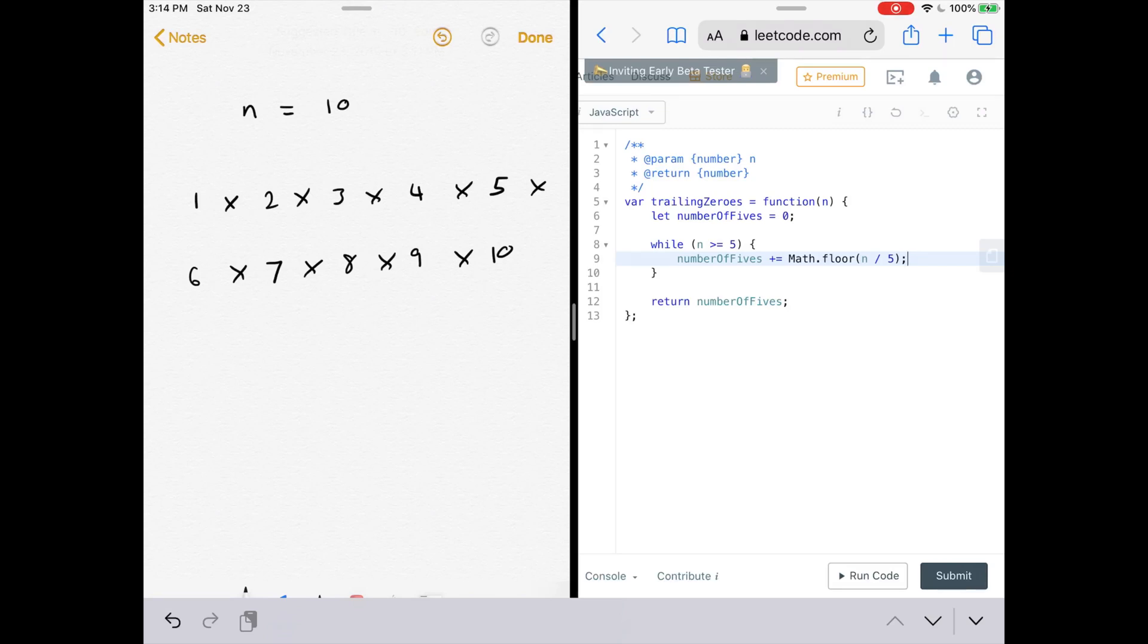So in this case, our n is 10, so when you divide that by 5, our number of fives would be 2. But then we also have to say n equals math dot floor n divided by 5. This takes care of the cases where our factorials also have multiple fives in them. So this will just keep repeating until they're completely broken down.